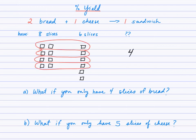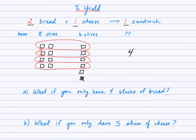So hopefully you determined, with the ratio being two to one to one, that for every two slices of bread we need one slice of cheese, and that will form one sandwich. So with the amount of bread and cheese we have, we can form four sandwiches, leaving two slices of cheese left over.